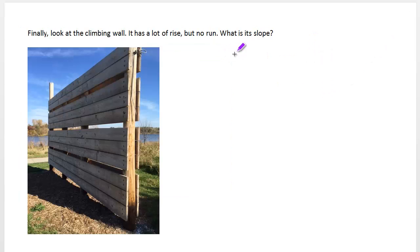A climbing wall, on the other hand, has a lot of rise but no run. So your slope is perhaps 10 feet over zero. We know that we can't divide by zero, that's undefined. So we say a vertical slope is undefined.